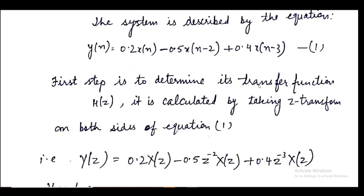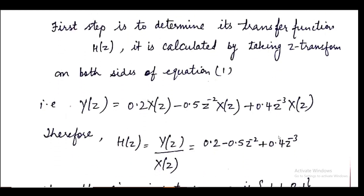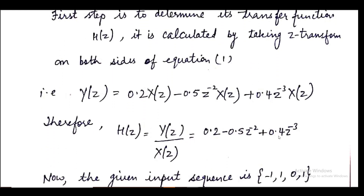Taking the Z-transform on both sides, we get Y(z) = 0.2·X(z) − 0.5·z⁻²·X(z) + 0.4·z⁻³·X(z). Note there is no x(n−1) term, so z⁻¹ does not appear. Taking X(z) common and dividing both sides, we obtain the transfer function H(z) = Y(z)/X(z) = 0.2 − 0.5z⁻² + 0.4z⁻³.